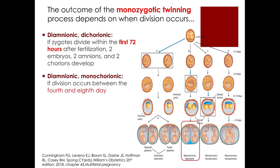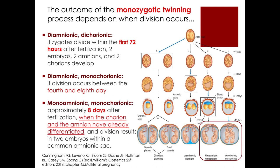For a diamnionic monochorionic pregnancy, this happens when the zygote divides between the fourth and eighth day after fertilization. For a monoamnionic monochorionic pregnancy, division occurs approximately on the eighth day after fertilization, when the chorion and amnion have already differentiated, resulting in two embryos within a common amnionic sac.